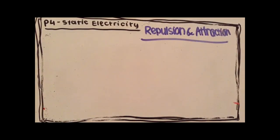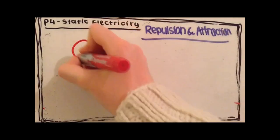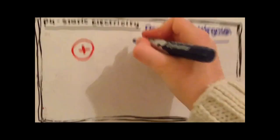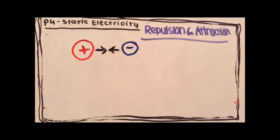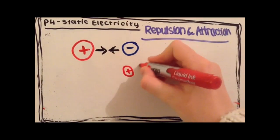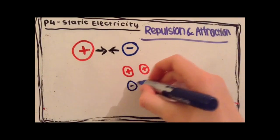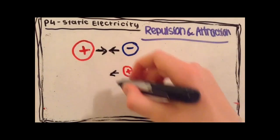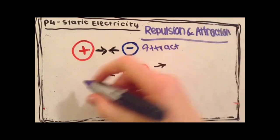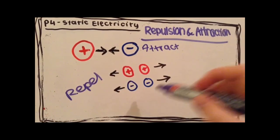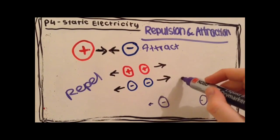Repulsion and attraction. Two things with opposite electric charges are attracted to each other. Two things with the same electric charges will repel each other. These forces get weaker the further apart the two things are.